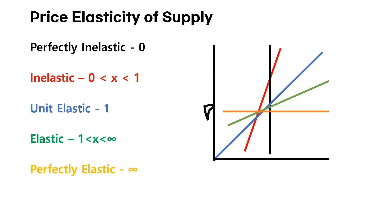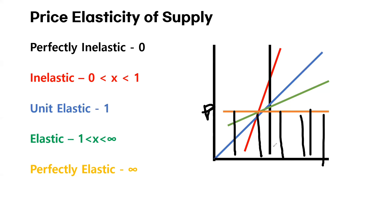Take a look at this orange curve. The price remains constant while the quantity supplied shifts to different levels.